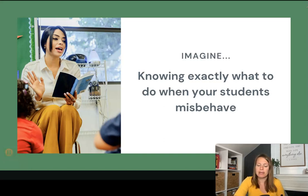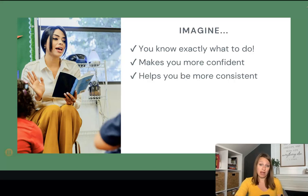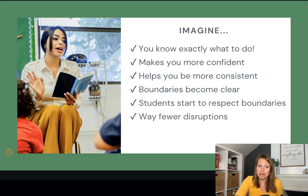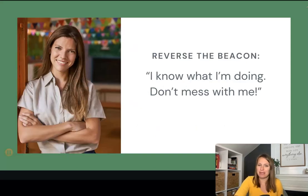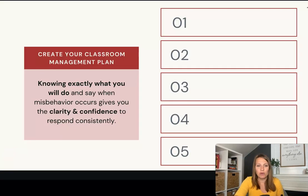Imagine how different it would be if you knew exactly what to do each time a student misbehaved. You would be way more confident and consistent, because all you'd have to do is follow the plan you already have. The boundaries would become so much clearer, because every time they're crossed you do the same thing. Students would start to respect those boundaries, and you'd have far fewer disruptions and finally be able to teach. You're reversing that beacon from saying I don't know what I'm doing to saying I know what I'm doing — don't mess with me. That's the intangible you may have seen in other teachers. It comes with a plan.